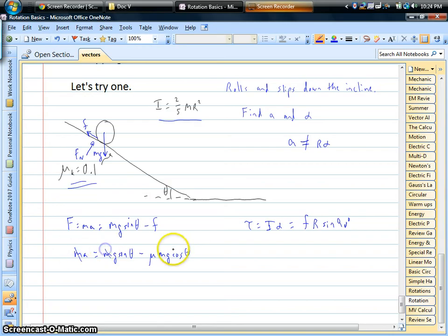So all of a sudden, the mass drops out, and we've got our answer. G sine theta minus 0.1 G cosine theta. And just like that, we can pop it out.